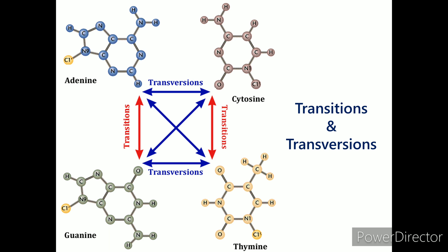A transition mutation is a point mutation that changes a purine nucleotide to another purine, or a pyrimidine nucleotide to another pyrimidine. Whereas a transversion refers to the substitution of a purine for a pyrimidine or vice versa.